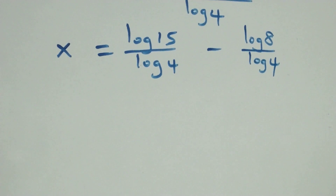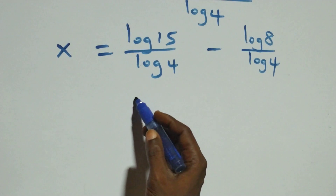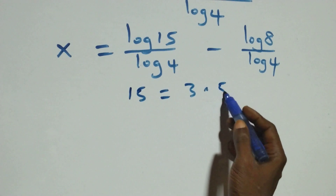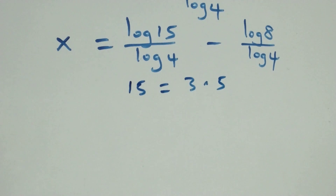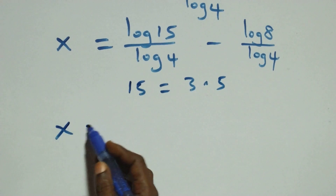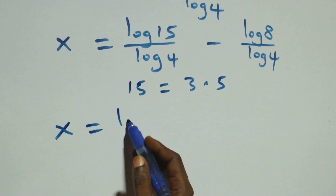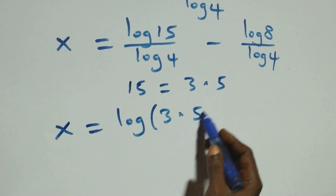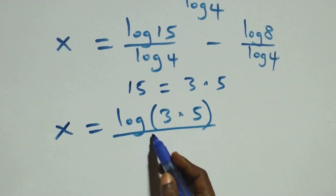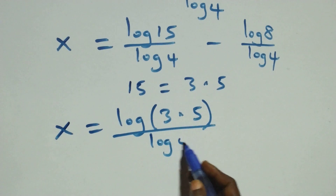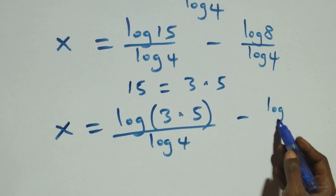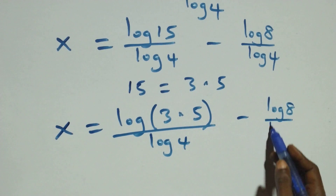Next step: we can write 15 as 3 times 5. So what we have becomes x equals log of 3 times 5, over log 4, minus log 8 over log 4.